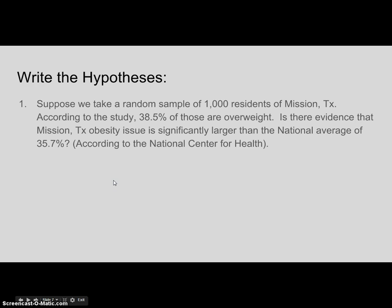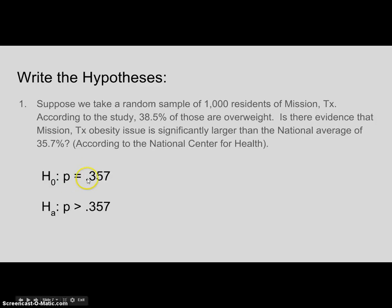Let's create our hypothesis using the Mission, Texas example. Our population proportion is 35.7%, so our null hypothesis is P equals 0.357. Our alternative is P greater than 0.357, because we're trying to see if the obesity issue in Mission, Texas is larger than the national average.